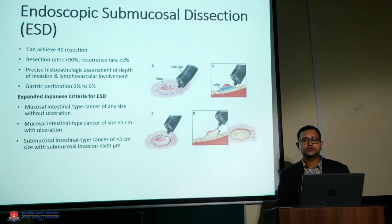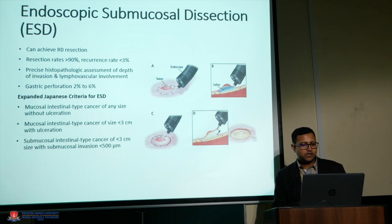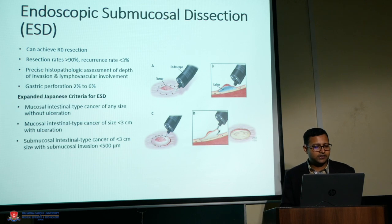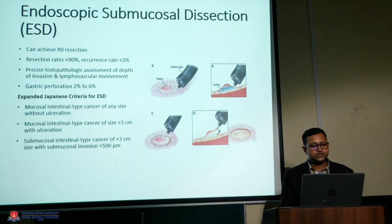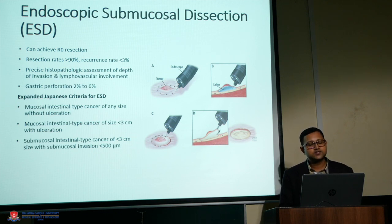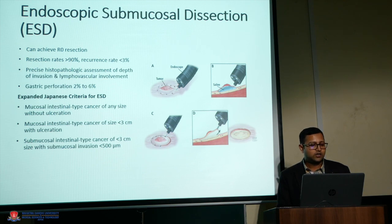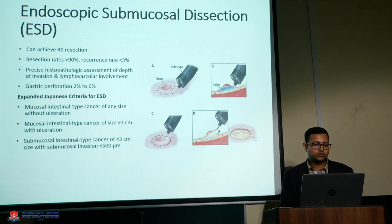To summarize, management of gastric polyps involves H. pylori treatment and regular surveillance. For pedunculated polyps, polypectomy is performed; for sessile polyps, EMR is used. Endoscopic submucosal dissection, or ESD, achieves R0 resections even for early gastric cancer. The main risks are bleeding and perforation. ESD criteria include intestinal-type early gastric cancer less than 3 centimeters or submucosal invasion less than 500 microns, determined by endoscopic ultrasound. If gastric cancer is advanced beyond these criteria, surgery is the only option.